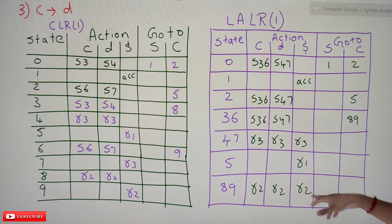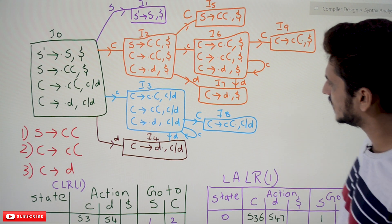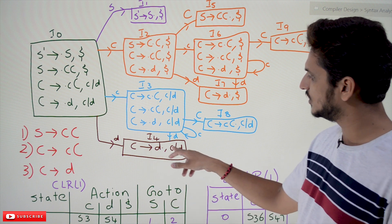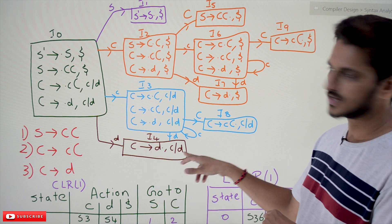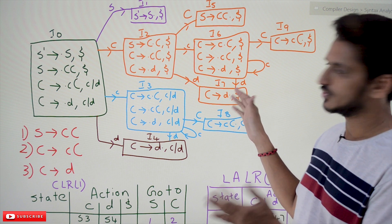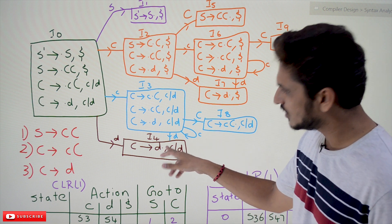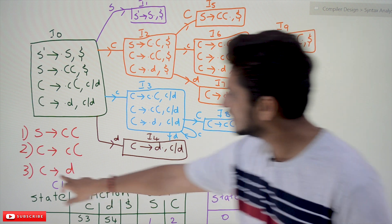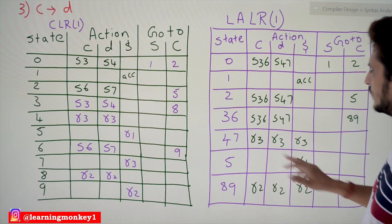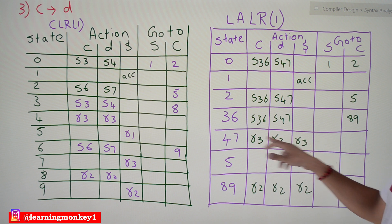So r2 is written in all three positions. Similarly, we identify the next similar states: i4 and i7. In i4, C tends to d dot with look-ahead symbols c or d. In i7, C tends to d dot with look-ahead symbol dollar. So we combine the fourth and seventh state. The action is reduce on the third production — reduce to 3. State 4-7 is combined, and r3 is written on c, d, and dollar symbol.